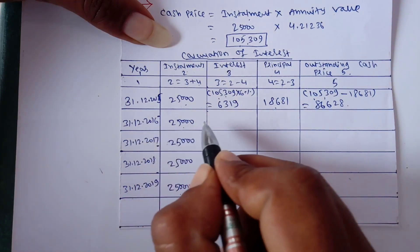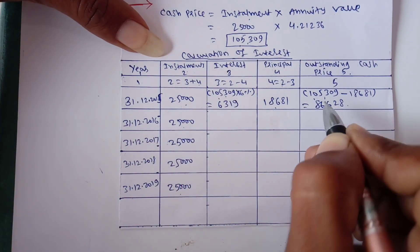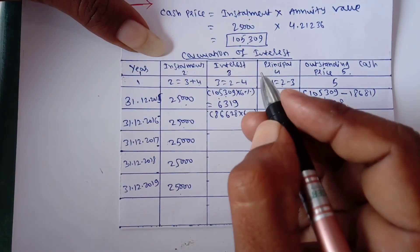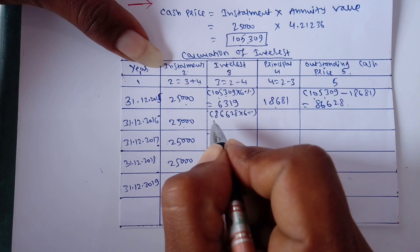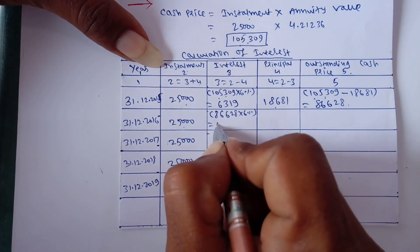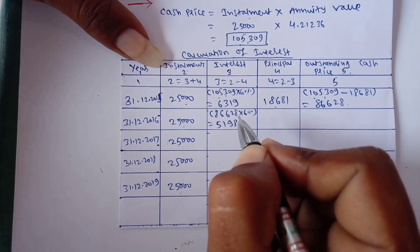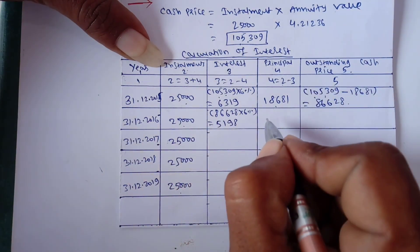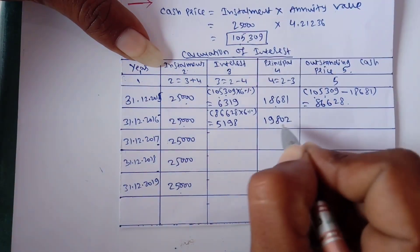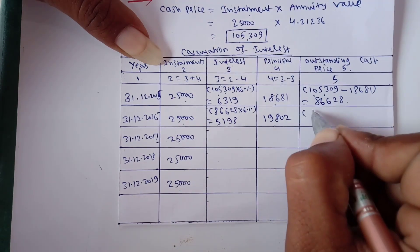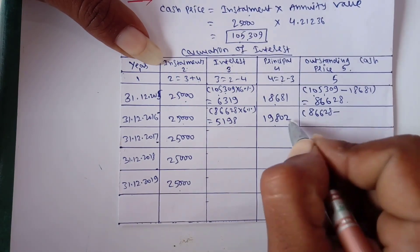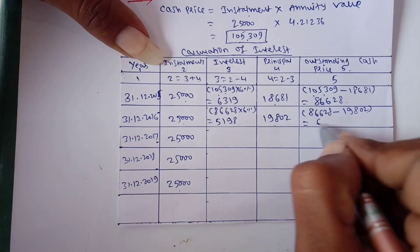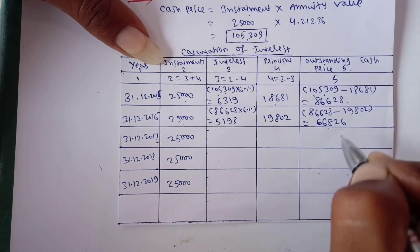For 31-12-2016: Interest is calculated on the outstanding cash price of Rs.86,628 at 6% = Rs.5,198. Principal = Rs.25,000 − Rs.5,198 = Rs.19,802. Outstanding cash price = Rs.86,628 − Rs.19,802 = Rs.66,826.